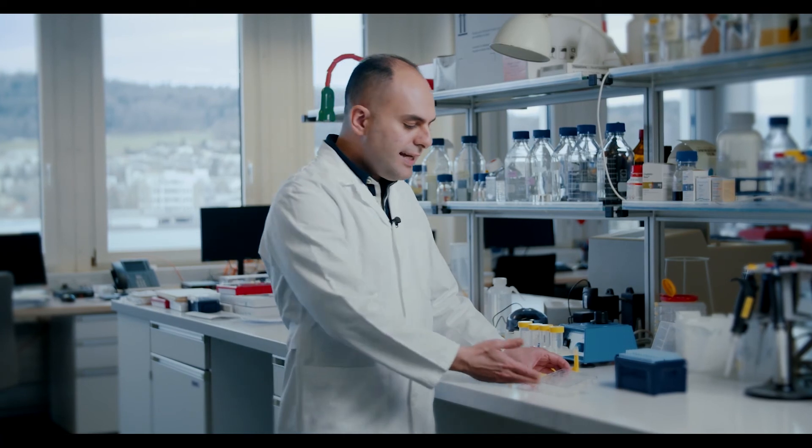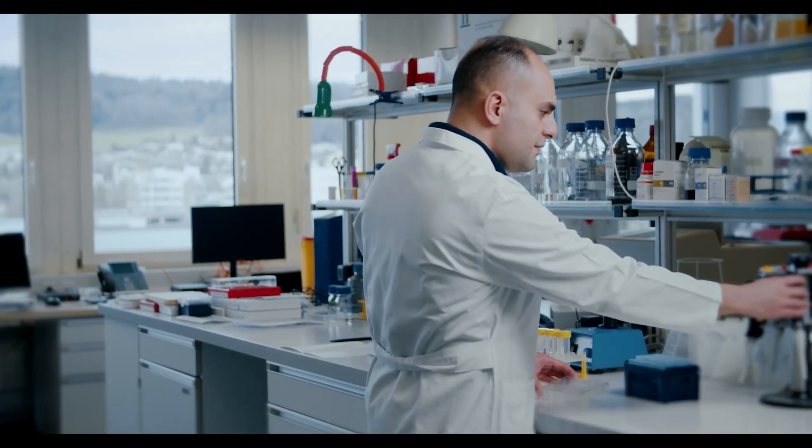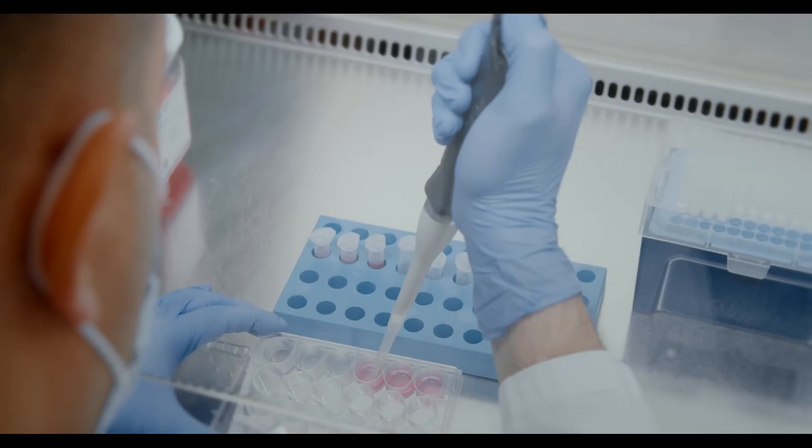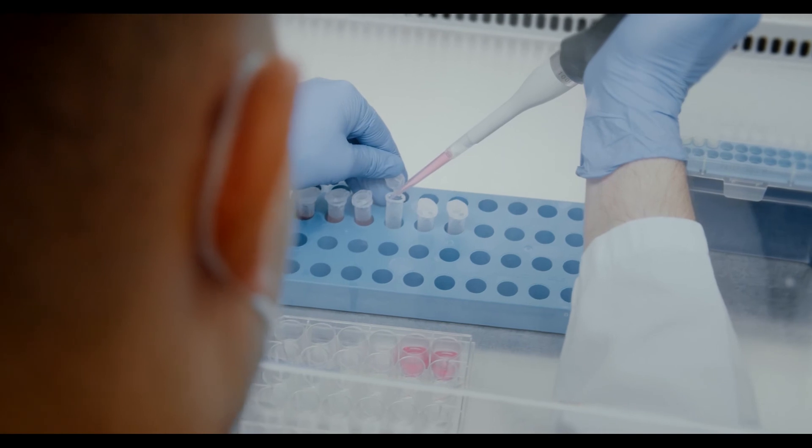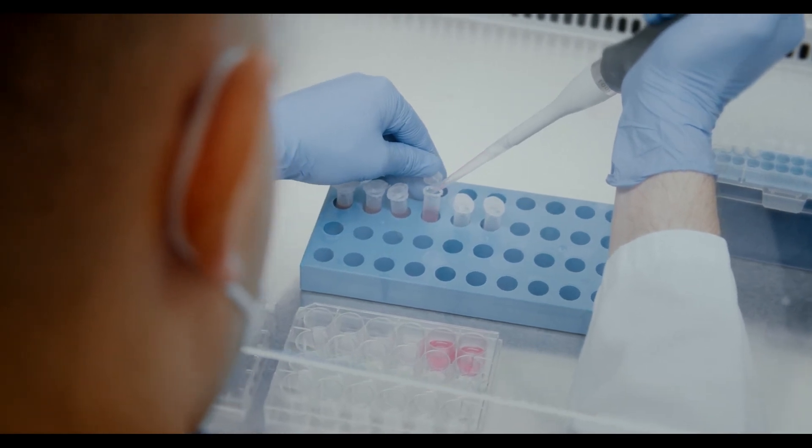To harvest the spheroids from the Spherical Plate 5D, we can simply tilt the plate by an angle of 20 to 30 degrees. And like this, all the spheroids that are free-floating come to the bottom and we can take the pipette, and like this, we can remove them all in one move and transfer them to the appropriate reservoir.